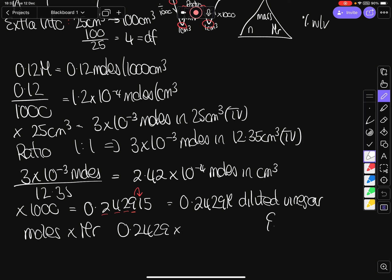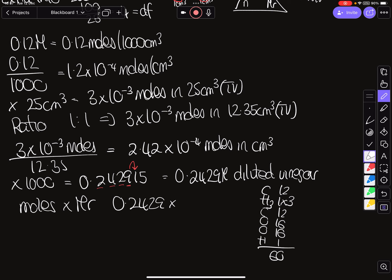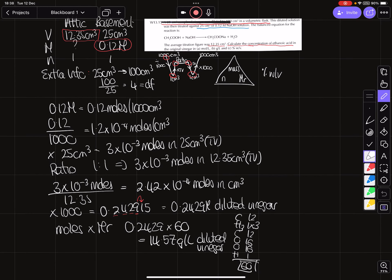We always then go to the mass triangle and multiply moles by molar mass. It's not 0.2429 itself — we multiply by the molar mass of ethanoic acid. That's 12 + 1, by 3, then 12, 16, 16, and 1. I'm showing all my numbers so that if I made a mistake I'd only lose one mark. We multiply by 60 and get 14.57 grams per liter — again, this is for our diluted vinegar.